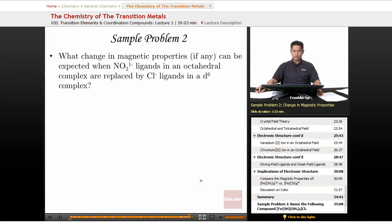This problem deals with magnetism. What change in magnetic properties, if any, can be expected when NO2^- ligands in an octahedral complex are replaced by Cl^- ligands in a d^6 complex?